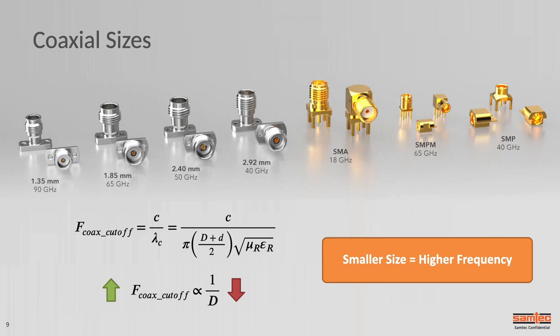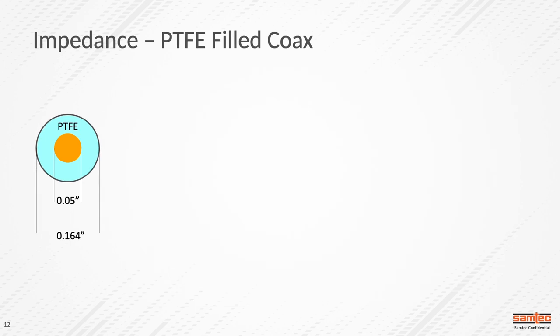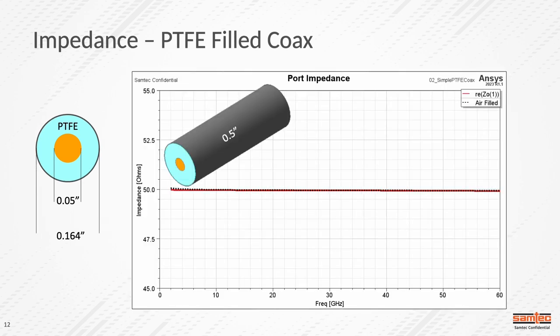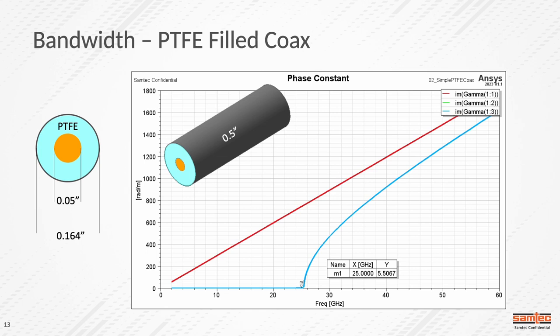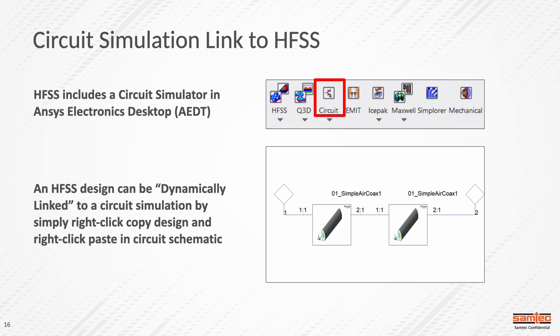When we populate the frequency ranges for different size connectors, a 2.92 millimeter coax has a 40 GHz bandwidth. Going to a smaller diameter, like 1.35 mm or 1 mm, takes you up to 90 or 110 GHz respectively. Looking at this from an HFSS simulation point of view, we can look at an air-filled coax and a PTFE-filled dielectric coax. Both have a 50-ohm transmission impedance even though they have different bandwidths. If you have access to HFSS, you also have access to a circuit simulation tool inside Electronics Desktop.